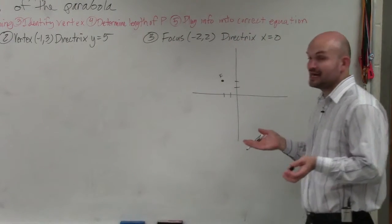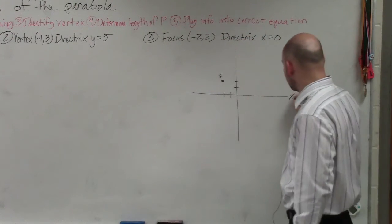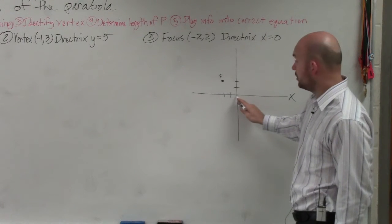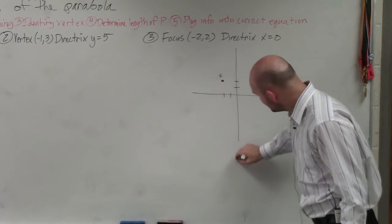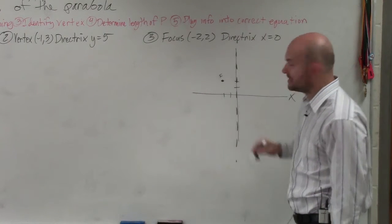Now my directrix is at the line x equals 0. So here's the x-axis. x is equal to 0 is right here. Well, if x is always equal to 0, it's a line. So therefore, that's my directrix, right?